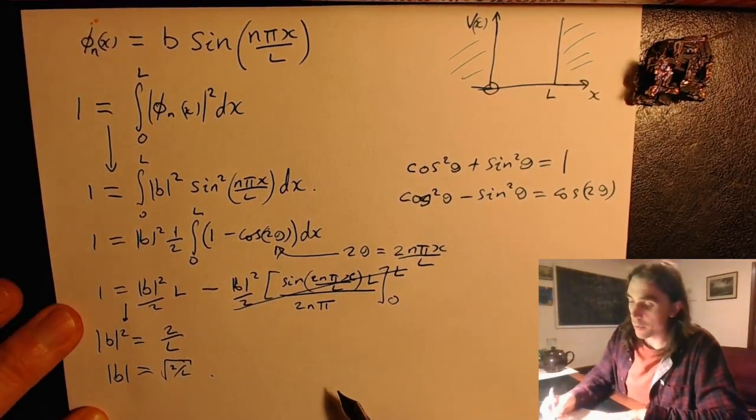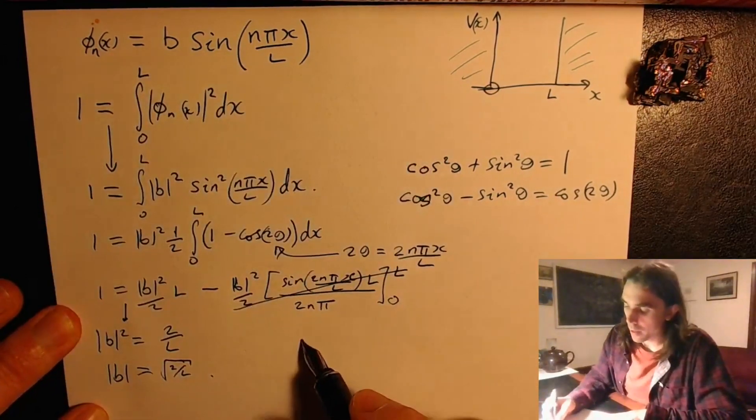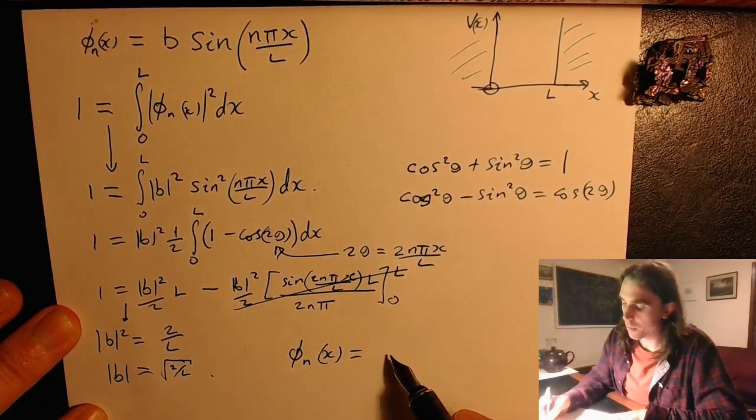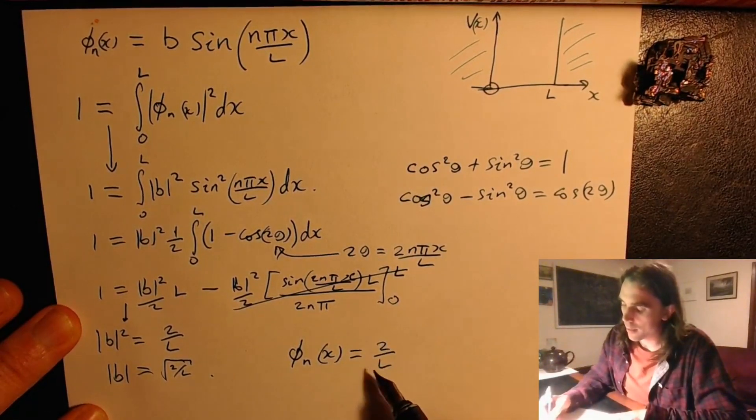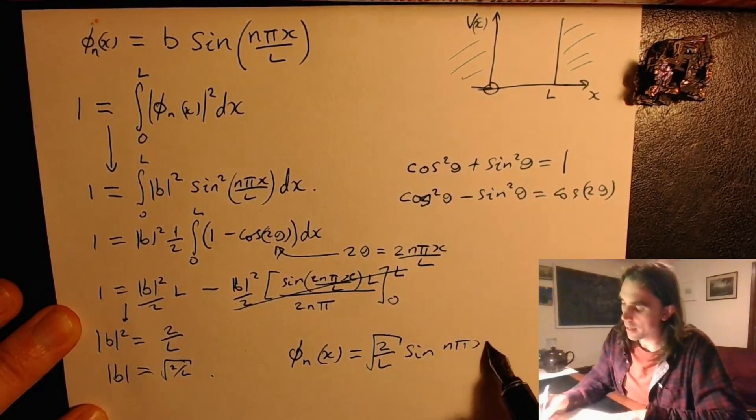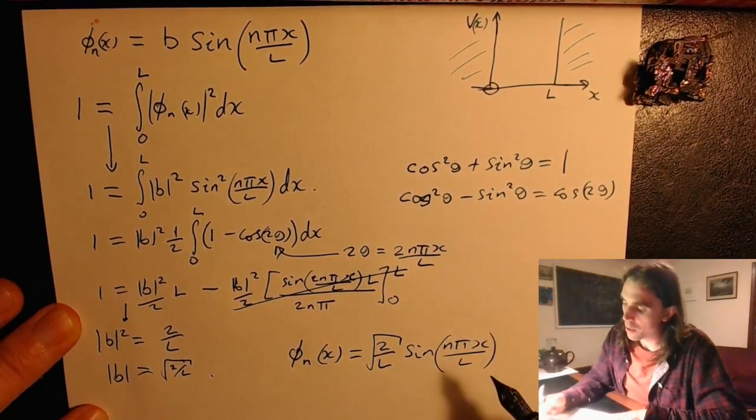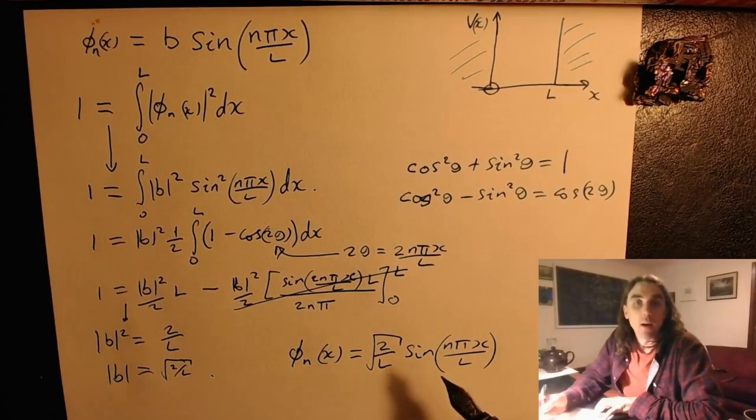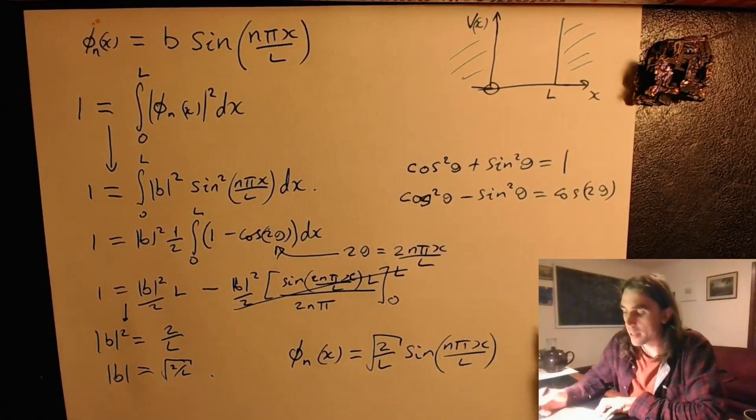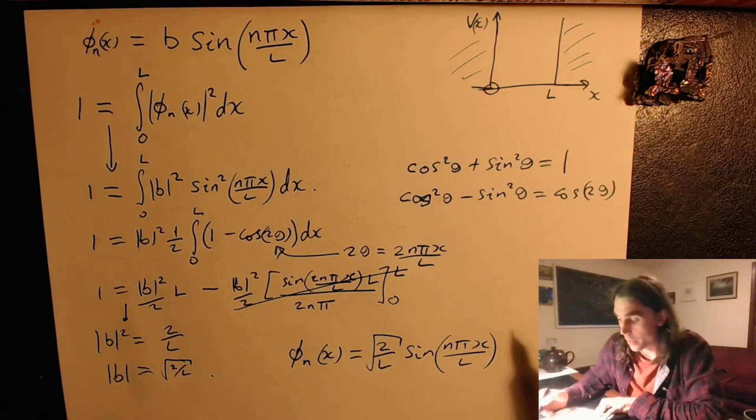And therefore we found our normalization. Our normalized energy eigenstates for the infinite potential well are given by square root of 2 over l, sin n pi x over l. And now the probability to find any particle described by this wave function across all of space is equal to 1, which is what we'd like.